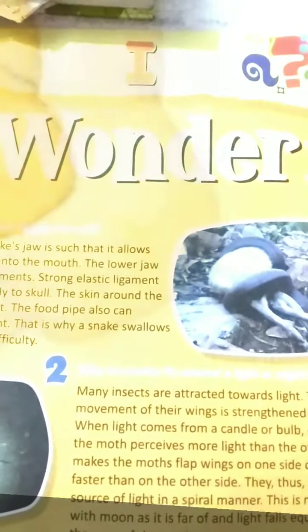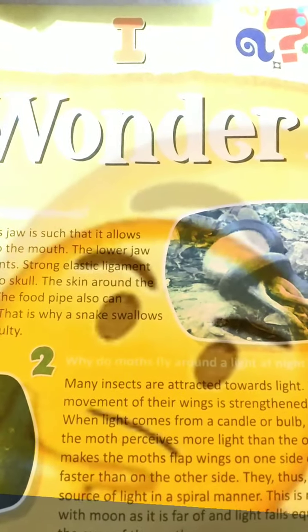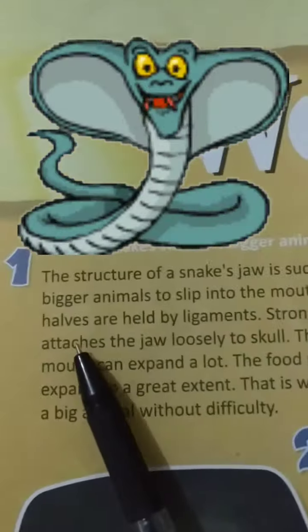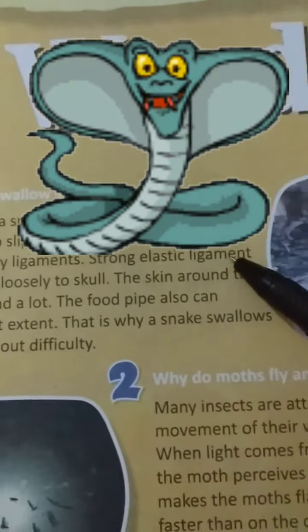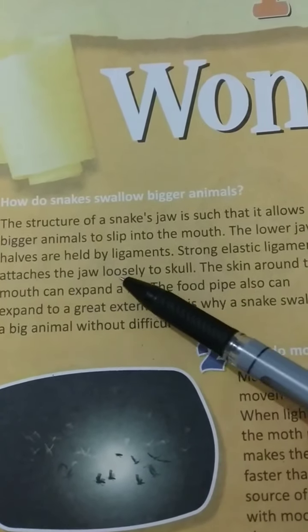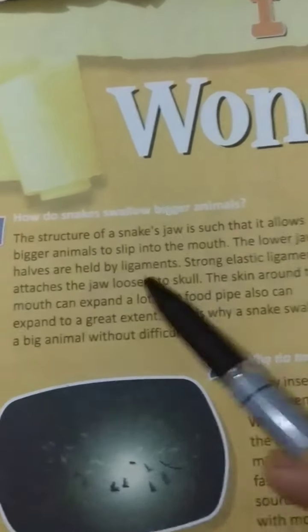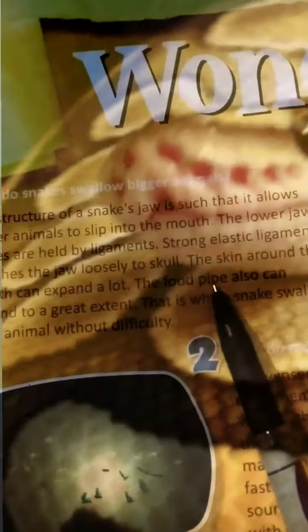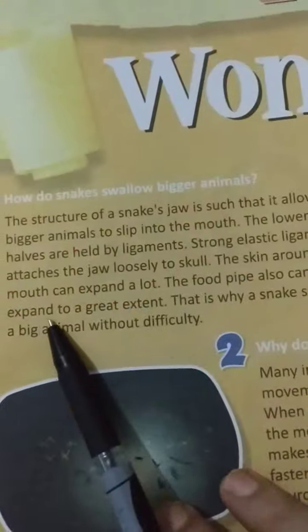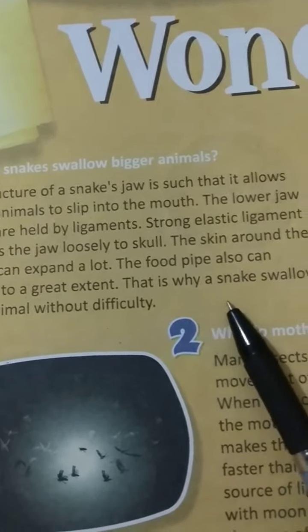The next chapter: I Wonder, page number 32 and 33. They give the question: how do snakes swallow bigger animals? The structure of a snake's jaw is such that it allows bigger animals to slip into the mouth. The lower jaw halves are held by ligament. Strong elastic ligaments attach the jaw loosely to the skull. The skin around the mouth can expand a lot, and the food pipe can also expand to a great extent. That is why a snake can swallow a big animal without difficulty.